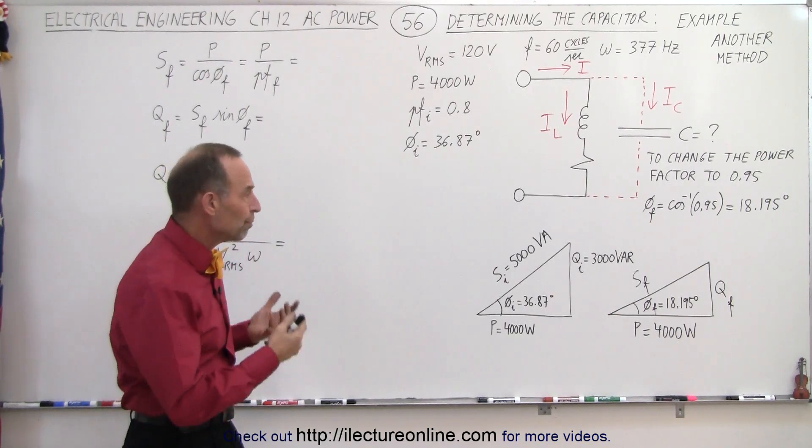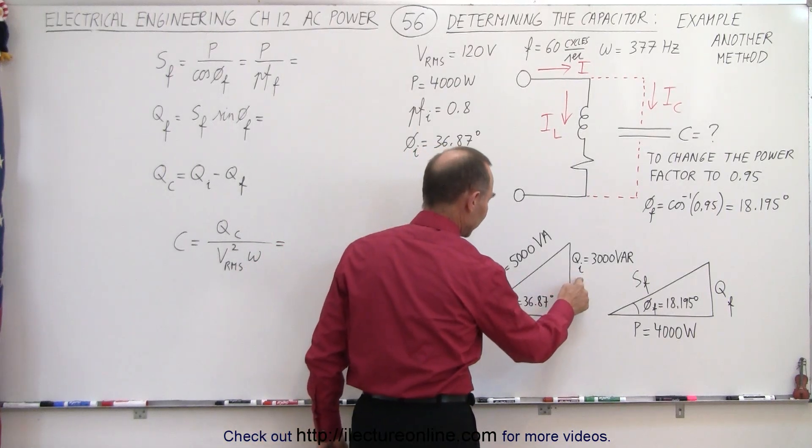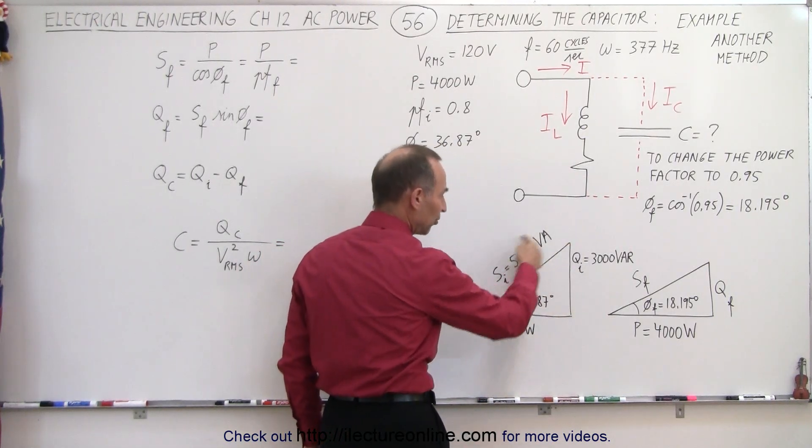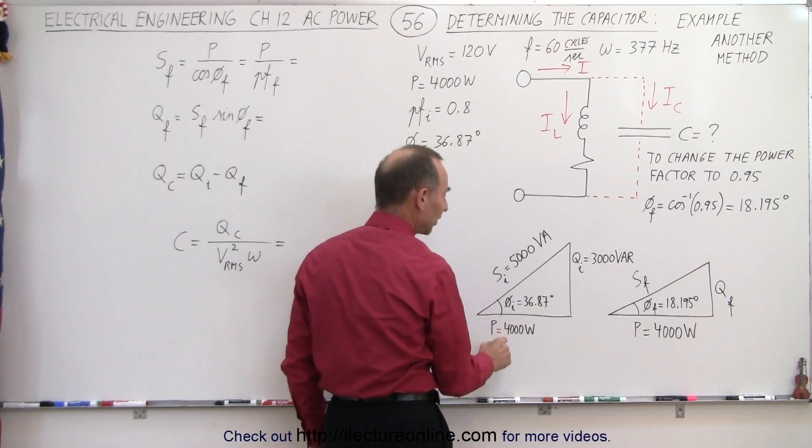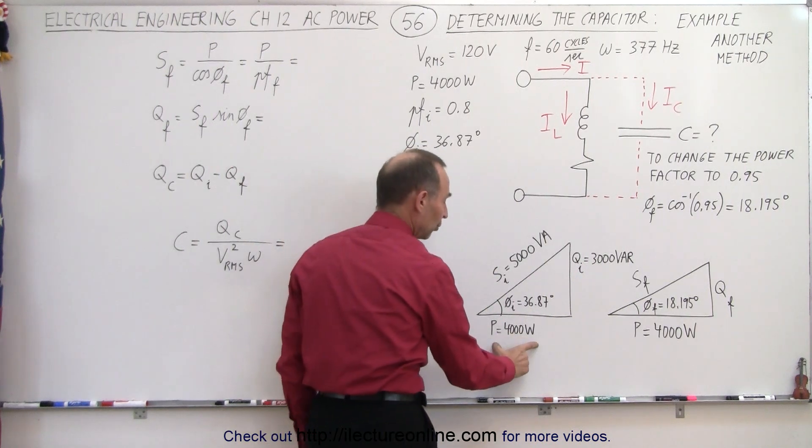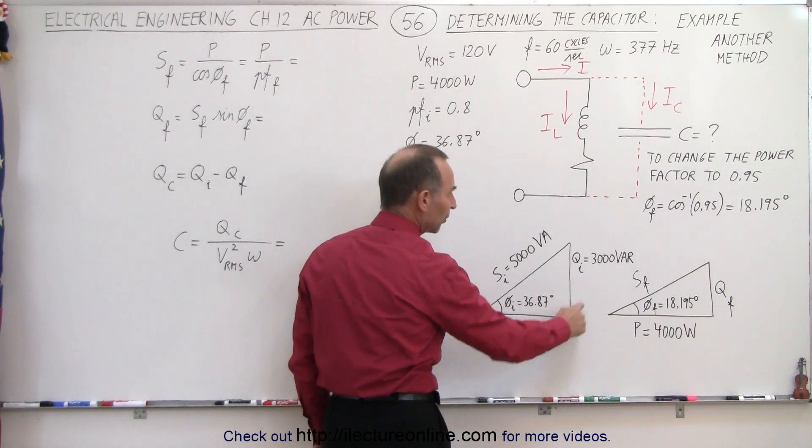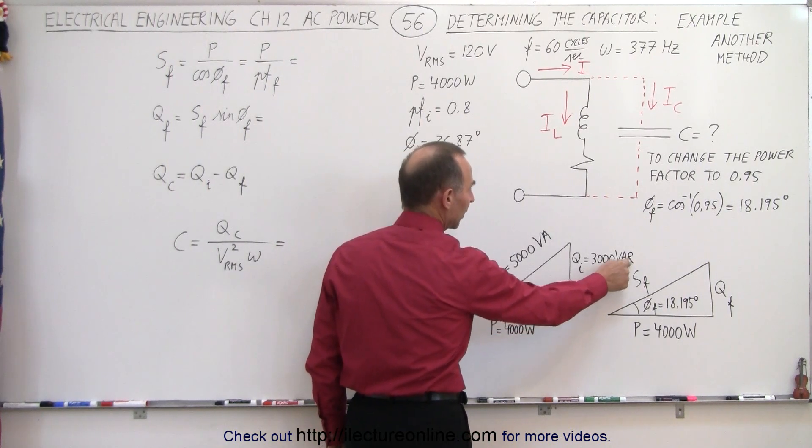So to calculate that, we can draw the two power triangles. We have the complex power, the reactive power, and the real power. That was the original situation. Since we have an angle of 36.87 degrees, that gives us a 3-4-5 triangle. So for a 4000 watt power requirement, we have a reactive power of 3000 VAR, volt ampere reactive.